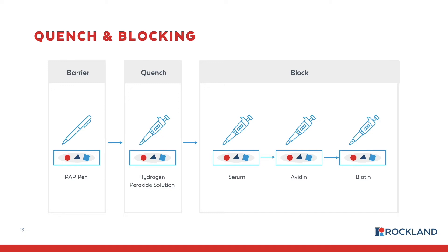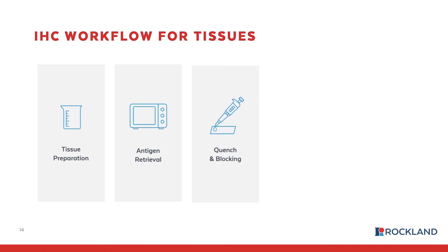The next two blocking steps are relevant when using amplification methods in IHC detection. Most popularly, an avidin-streptavidin approach is used, and since biotin is found naturally in tissues, it can react with the avidin-streptavidin used in IHC detection. Blocking endogenous biotin with avidin, followed by blocking with biotin to block additional biotin binding sites on the avidin or streptavidin molecules, is needed. Overall, these steps are very important to decrease non-specific interactions and provide a very low background for the tissue.